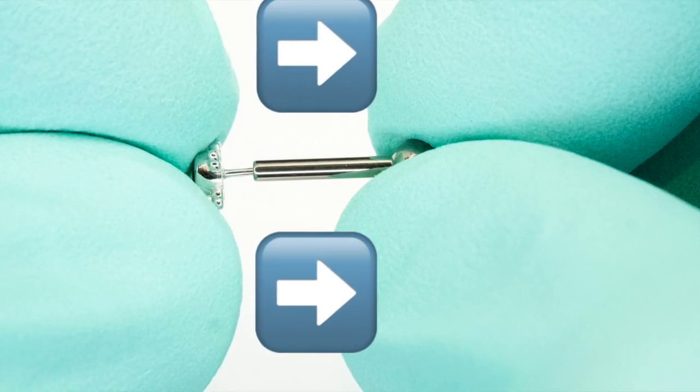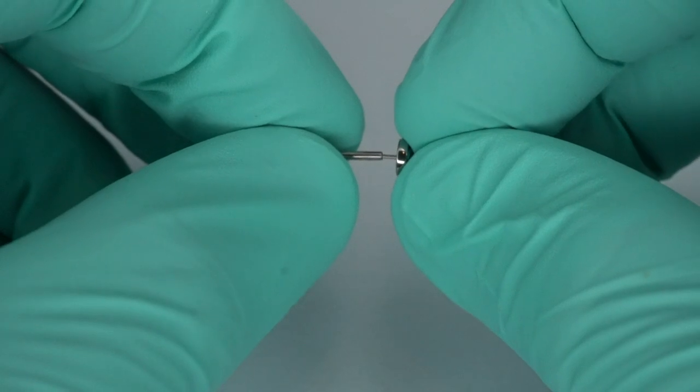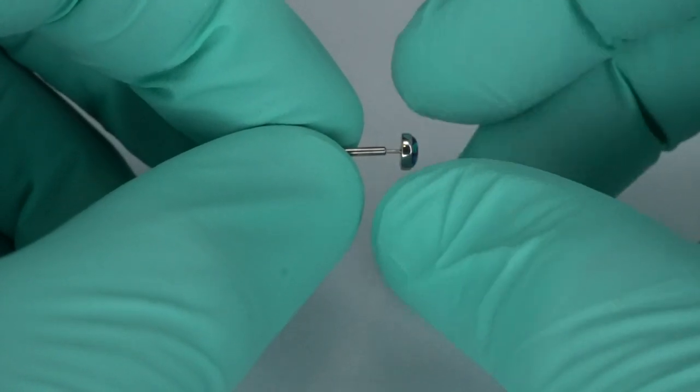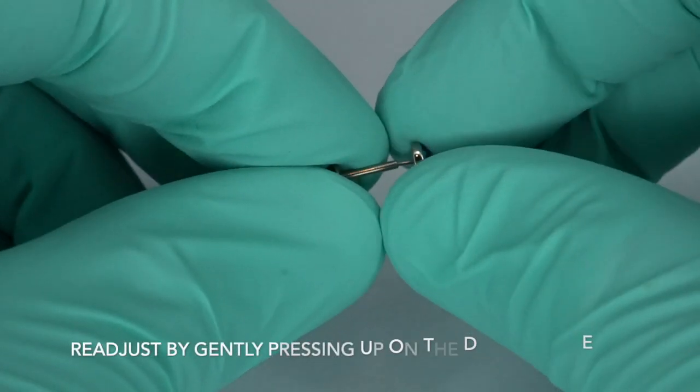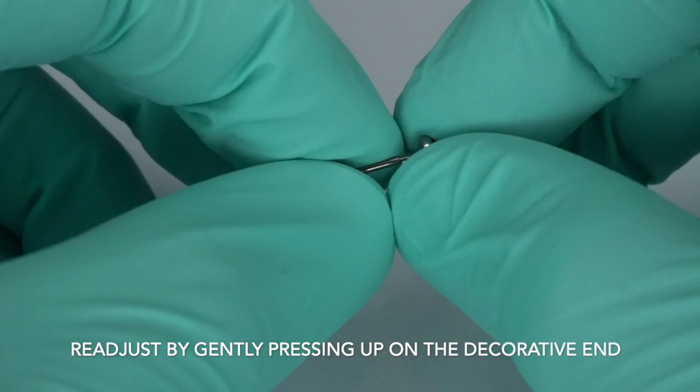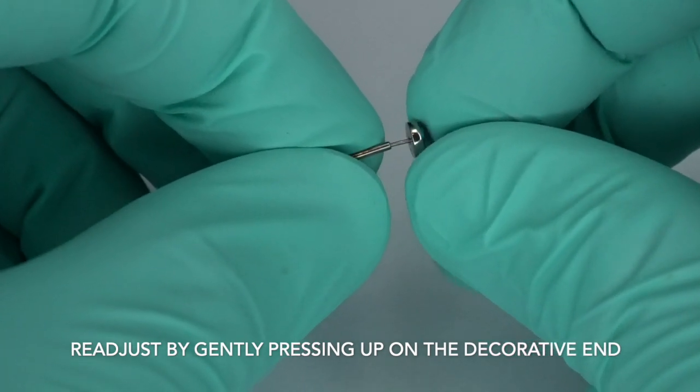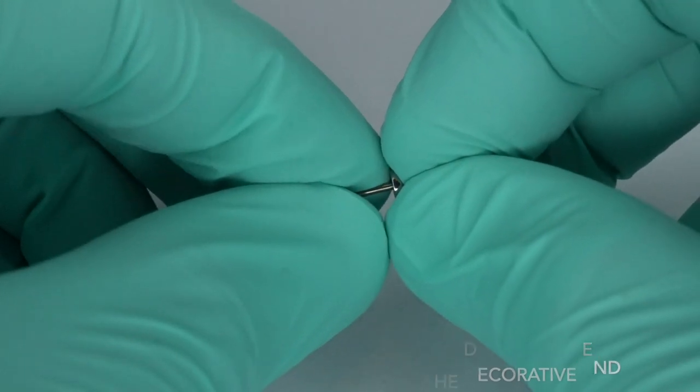If it seems like the end doesn't want to fit in the post, it may be too tight and that's okay. Don't force it. You'll just want to readjust the bend to make a slightly looser fit. Once you've got the piece in, double check it to make sure it's secure and won't come out without a bit of effort.